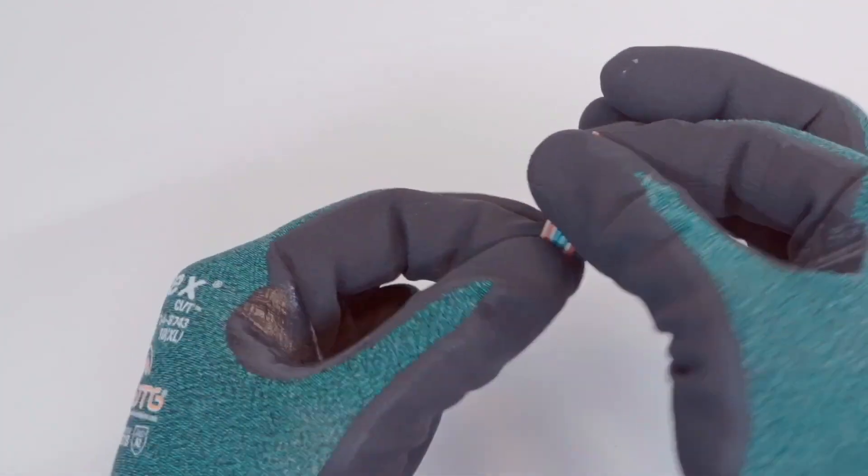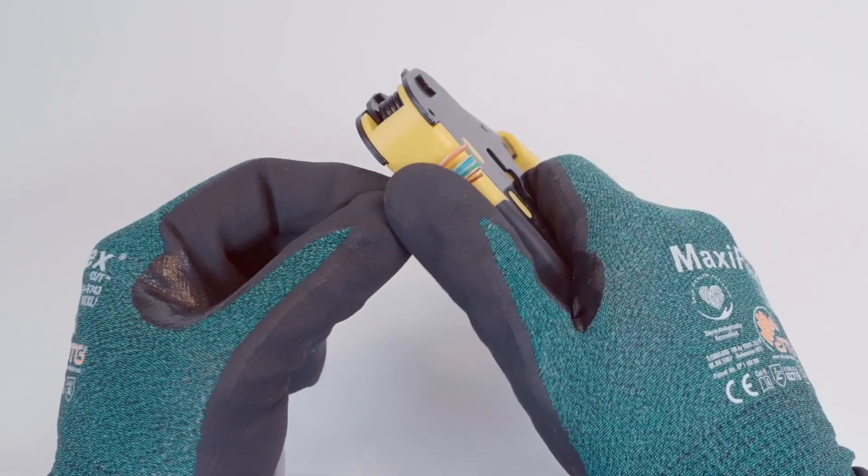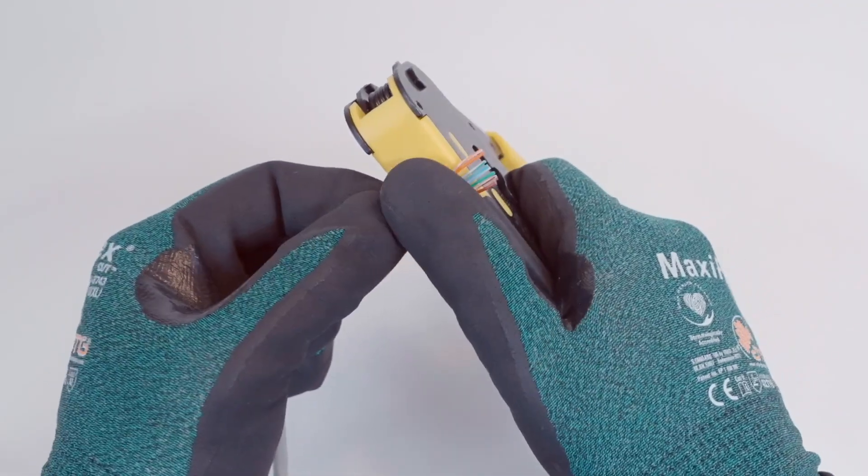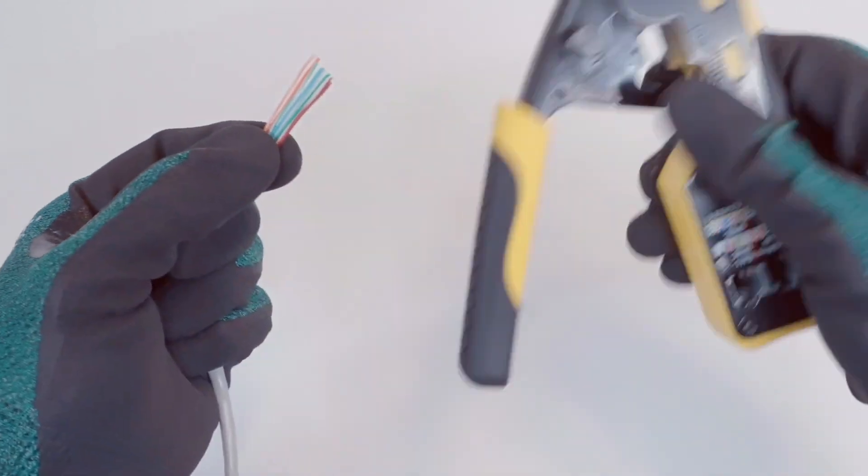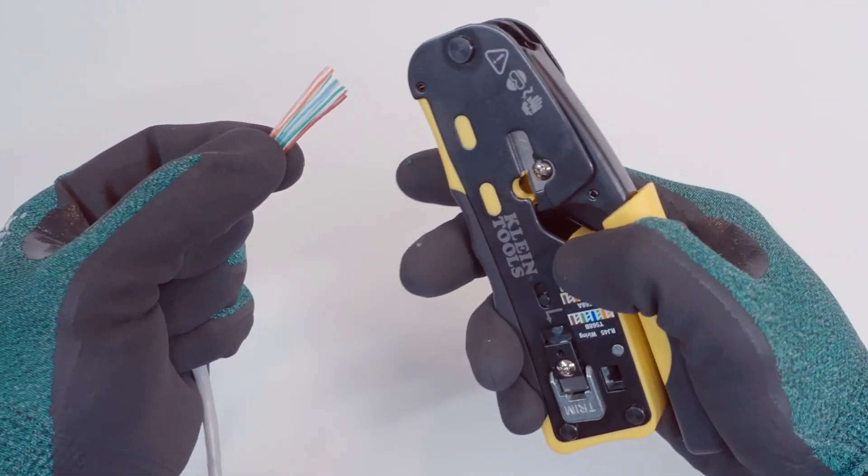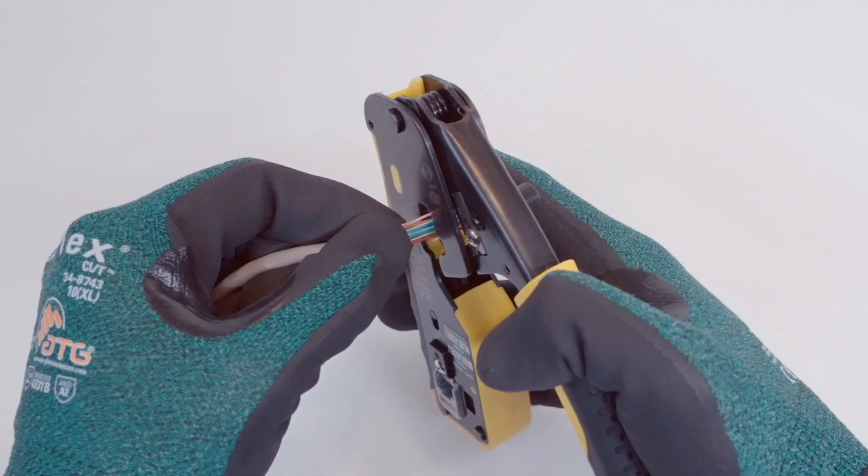Hold all eight wires so they are lying flat in this configuration, all touching each other. Straighten the wires once again while in the correct order. Use wire cutters or the crimper to make a straight cut across the end of all eight wires.